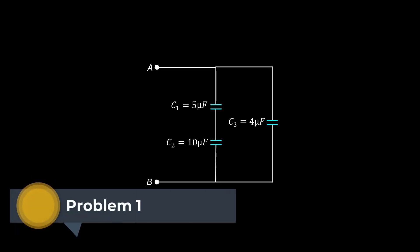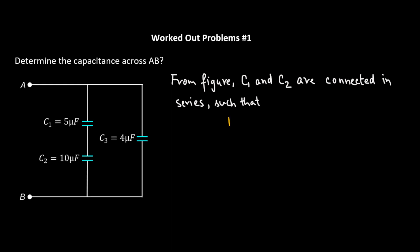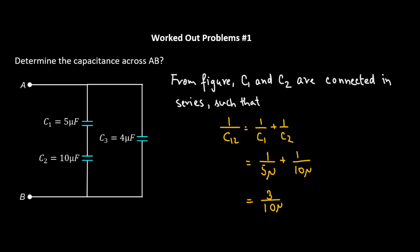Problem number one: Determine the capacitance across AB. From the figure, we observe that C1 and C2 are connected in series, so we apply the equivalent capacitance formula: 1 over C12 equals 1 over C1 plus 1 over C2. Substituting the values, we get 1 over 5 microfarad plus 1 over 10 microfarad, which gives us 3 over 10 microfarad. Taking the reciprocal, C12 equals 10 over 3 microfarad.